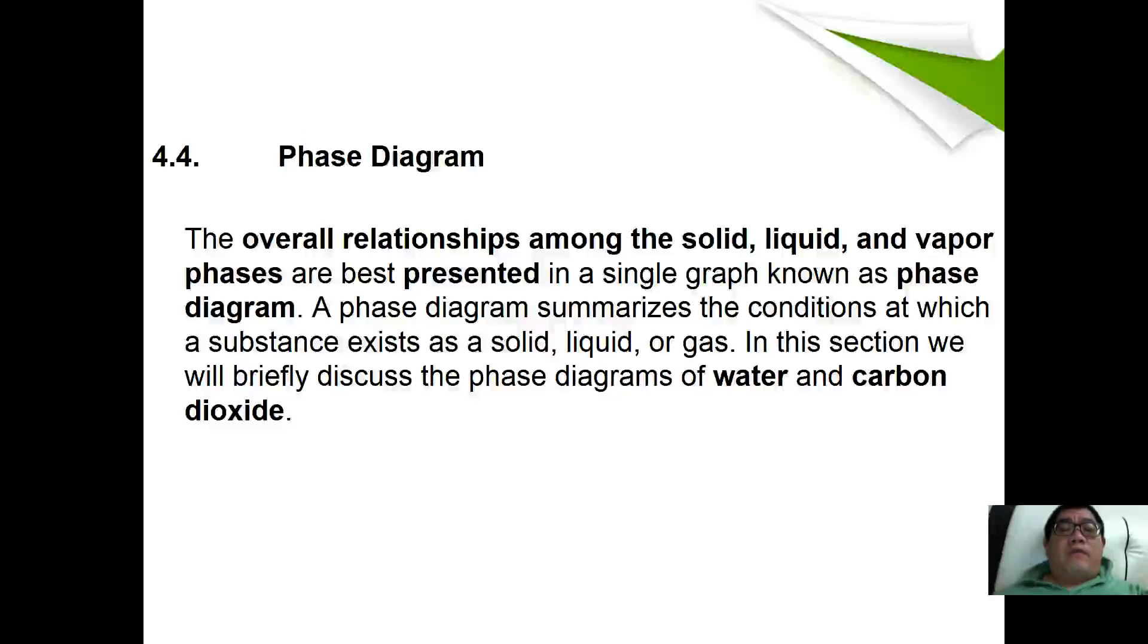Hello guys, we are going to continue with the fourth video for the state of matter where we are going to finalize it with phase diagrams. So what is actually a phase diagram? A phase diagram is a graph that shows the overall relationship between solid, liquid, and vapor and its temperature and pressure. The phase diagram summarizes the condition in which your substance exists as a solid, liquid, or gas. So in this section, we are going to discuss briefly the phase diagram of water and carbon dioxide.